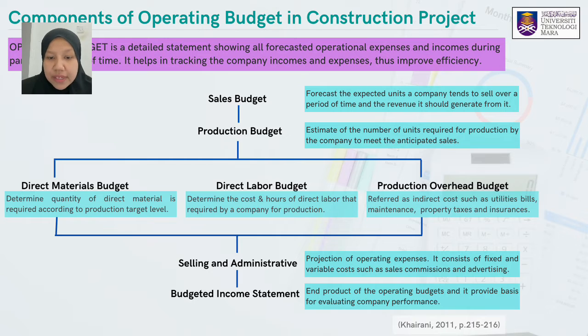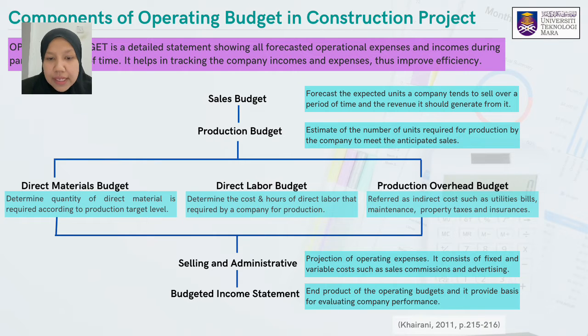The selling and administrative budget consists of fixed and variable costs such as sales commissions and advertising fees. Last but not least, the budgeted income statement is the end product of the operating budget and provides a basis for evaluating company performance.